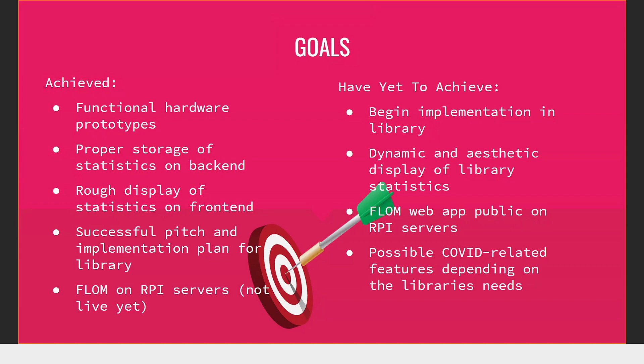On the left, we have some of the goals we set at the start of the semester that we achieved. Those include functional hardware prototypes, proper storage of statistics, and a graph set up to display those statistics. We had a successful pitch and implementation plan for the library — we met with library faculty and pitched FLOM. They liked it. For next semester, we're looking to set up demo rooms, finish the statistics portion of the web app, make the web app public on RPI servers, and look at possible COVID-related features depending on what the library needs.